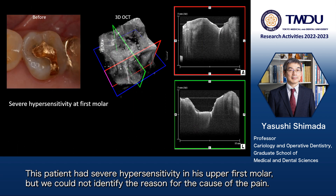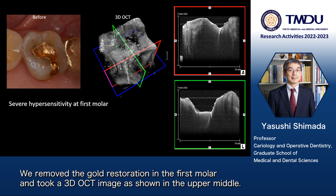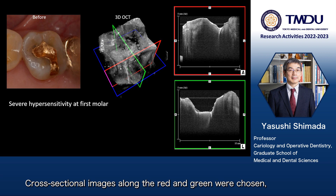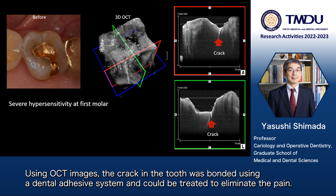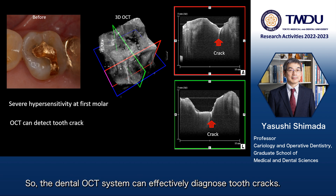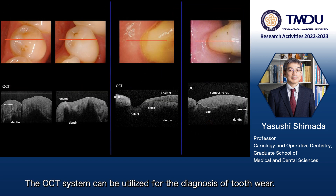This patient had severe hypersensitivity in his upper first molar, but we could not identify the reason for the cause of the pain. We removed the gold inlay in the first molar and took a 3D OCT image as shown in the upper middle. Cross-sectional images along the red and green lines were chosen, where we found a tooth crack as a white line penetrating into the structure. Using OCT images, the crack in the tooth was bonded using a dental adhesive system and could be treated to eliminate the pain. So the dental OCT system can effectively diagnose tooth cracks.